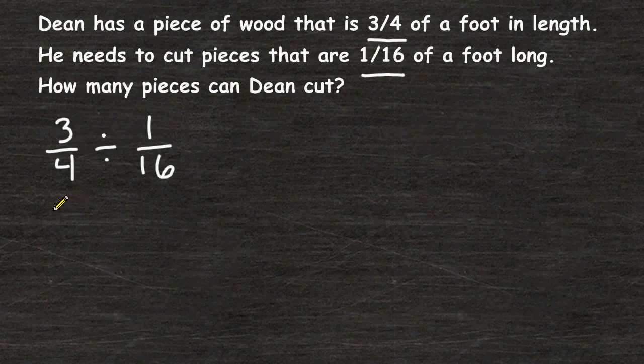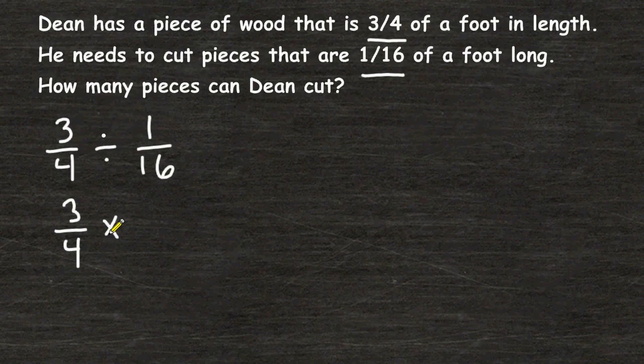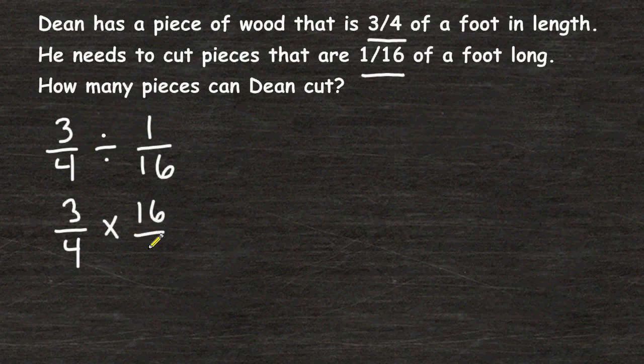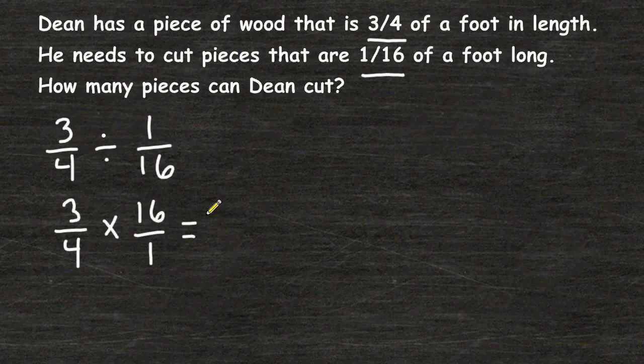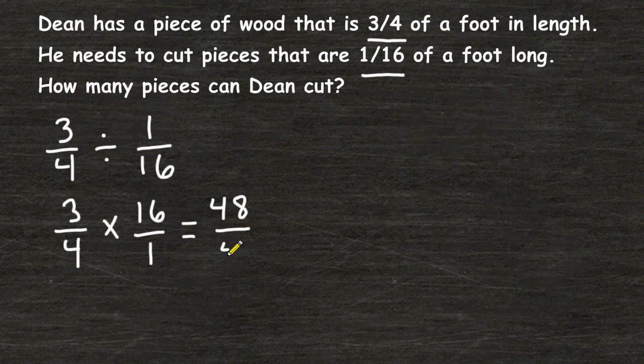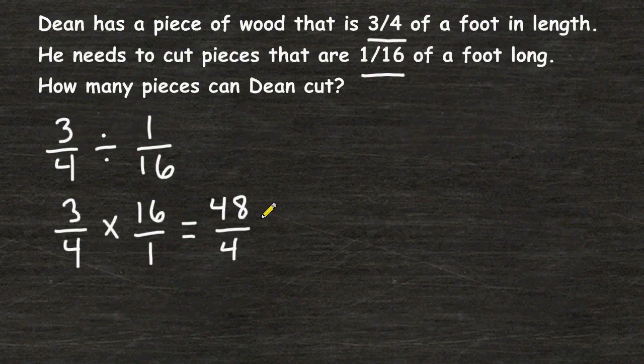After setting up your problem, rewrite the first fraction and multiply it by the reciprocal of the second fraction. So we are going to multiply 3 4ths by 16 over 1. The next thing we can do is multiply the numerators together. 3 times 16 is 48 and the denominators have a product of 4. Because we have an improper fraction, we are going to divide the numerator by the denominator and 48 divided by 4 is exactly 12.